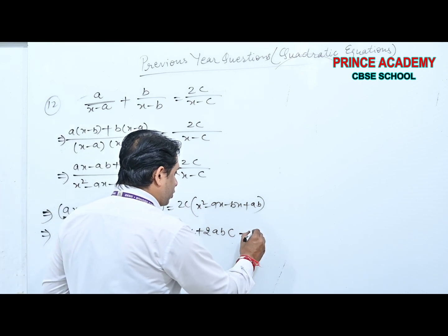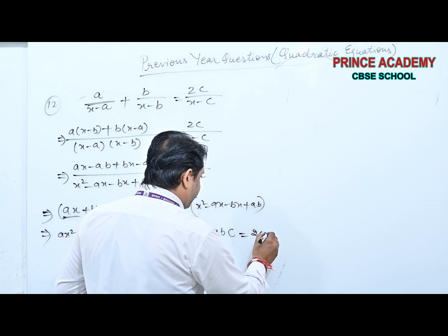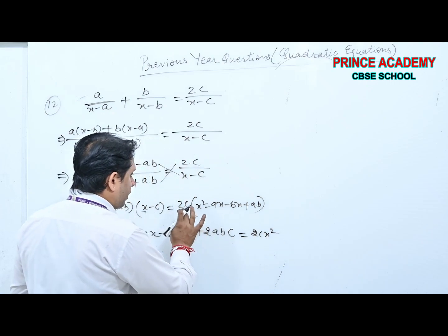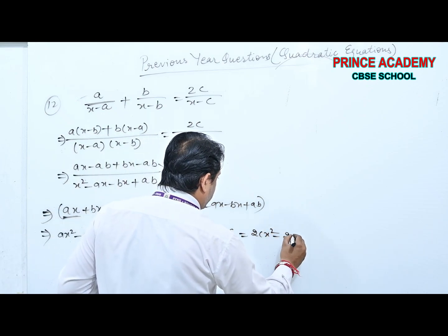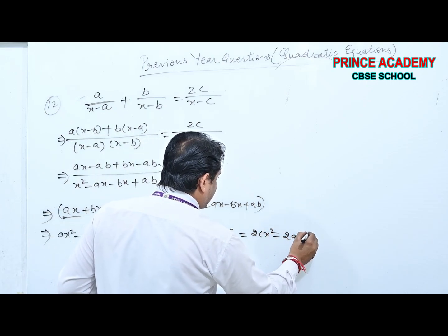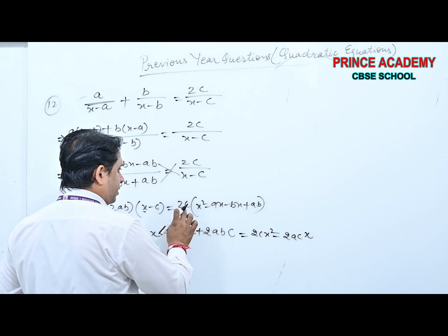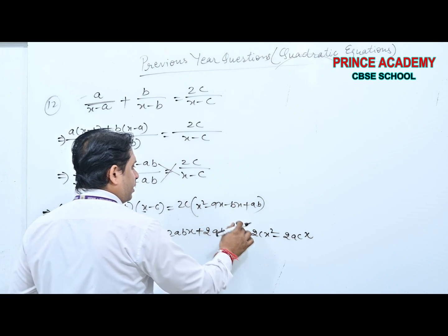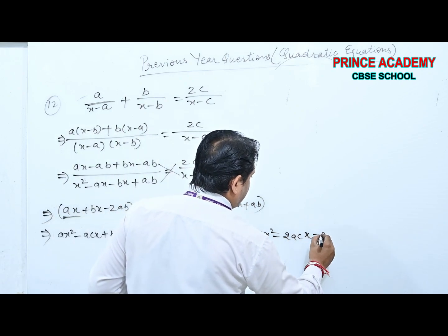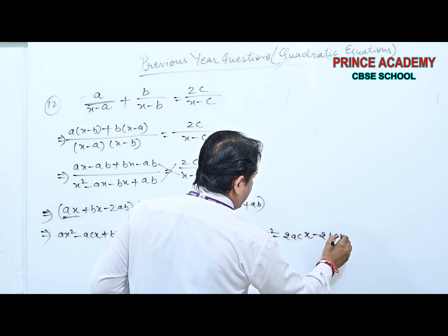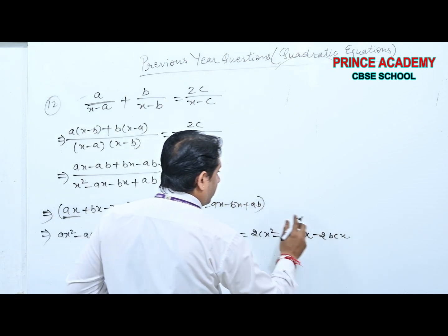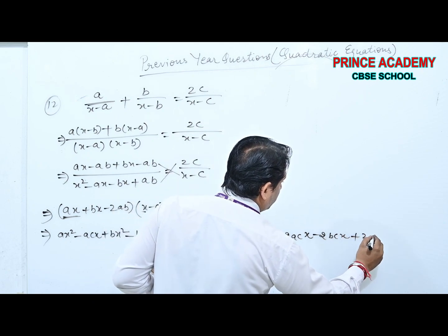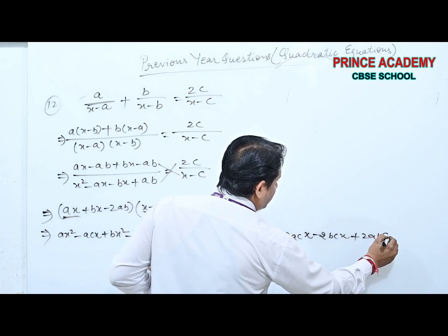Expanding the numerator on the left: ax − ab + bx − ab = (a+b)x − 2ab. Cross-multiplying: [(a+b)x − 2ab](x−c) = 2c[(x−a)(x−b)]. Expanding both sides to form the quadratic equation: 2cx² − 2acx − 2bcx + 2abc on the right.